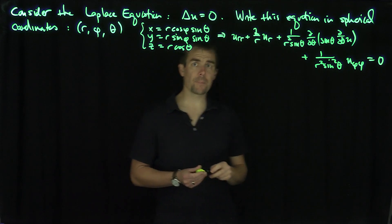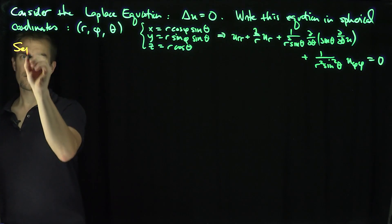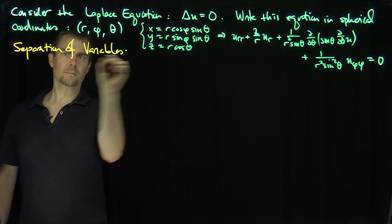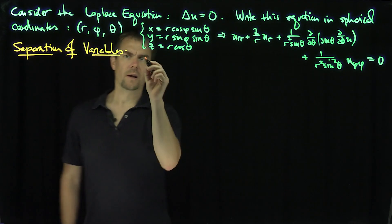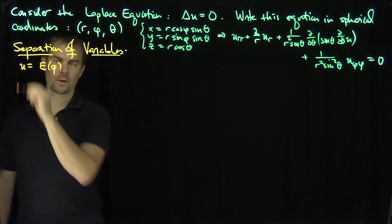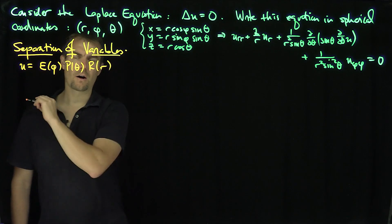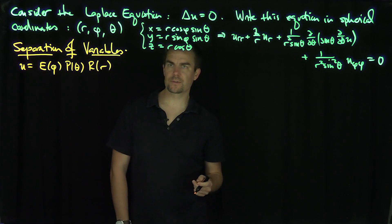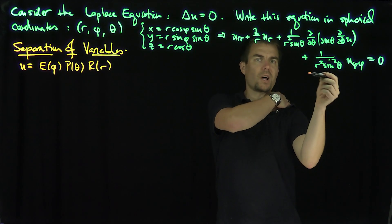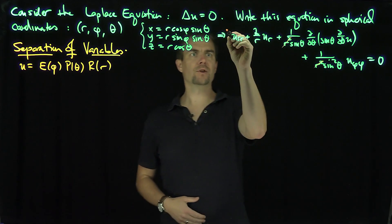Now we're going to separate variables. We're going to let u be a function E of φ, a function P of θ, and a function R of r. We seek solutions of this form, and if we plug them into the Laplace equation, the first thing we do is multiply by r², which lets us simplify the equation into self-symmetric form.